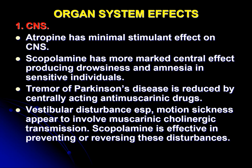As far as the pharmacological effects on organ systems are concerned — first, the CNS: atropine has minimal stimulating effects on the CNS, while scopolamine has more marked CNS effects producing drowsiness and amnesia in sensitive individuals. Tremors of Parkinson's disease are reduced by anti-muscarinic drugs like atropine and scopolamine. Vestibular disturbances, especially in motion sickness or sea sickness, appear to involve muscarinic cholinergic transmission, so scopolamine is especially effective in preventing or reversing these disturbances.